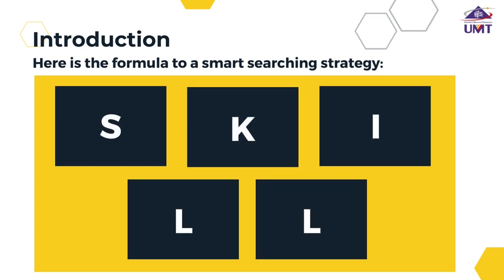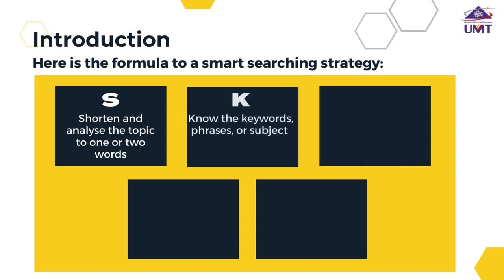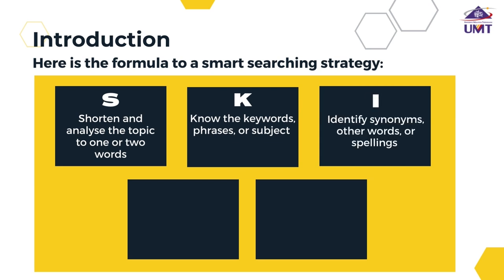SKILL. S: Shorten and analyze the topic to one or two words. K: Know the keywords, phrases, or subject. I: Identify synonyms, other words, or spellings.